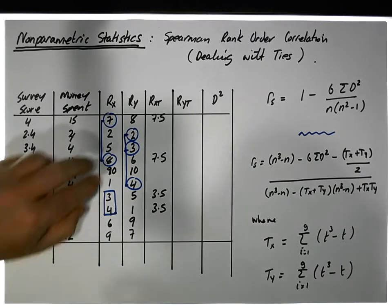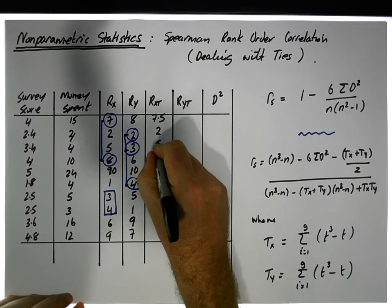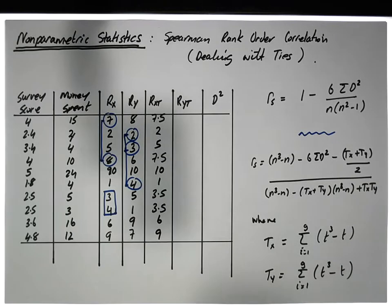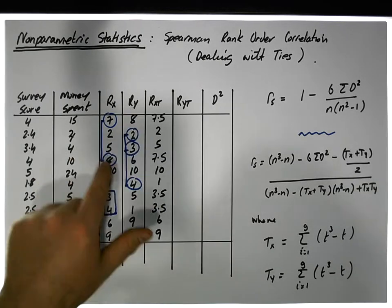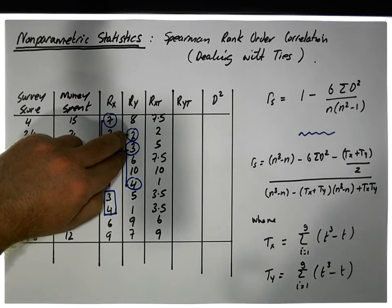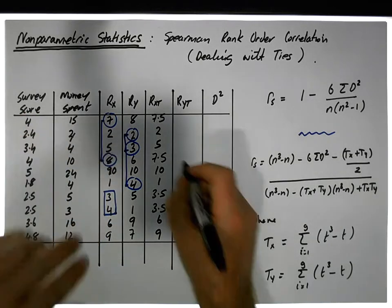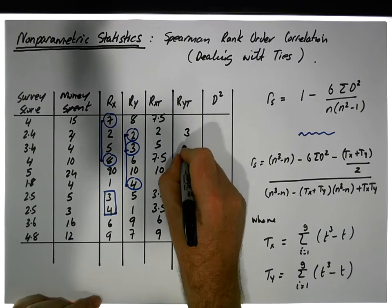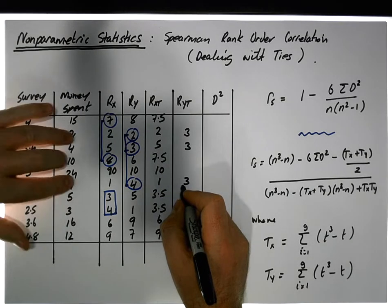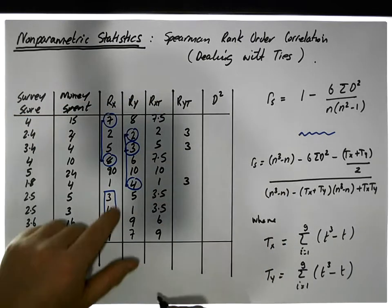What we need to do is add these scores together. Everything else is just as is: we have 2, 5, 10, 1, 6, and 9. In relation to the Y variable — the money spent variable — we have 2 and 3, which gives us 5, plus 4 gives us 9. There are 3 in the group, so 9 divided by 3 gives us 3. So values 4, 4, and 4, although given different ranks, have now all got the same rank of 3.